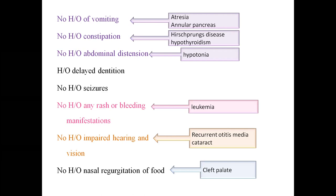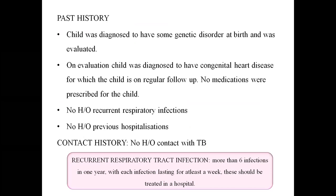Ask about constipation to rule out hypothyroidism and Hirschsprung's disease, and abdominal distension which can occur due to hypotonia. Ask history of delayed dentition, history of seizures, rash or bleeding manifestations — Down syndrome children are prone for leukemia, so ask about petechiae or purpuric spots. Ask about impaired hearing and vision to rule out otitis media-related hearing loss and cataract. Also ask about nasal regurgitation of food to rule out cleft palate.